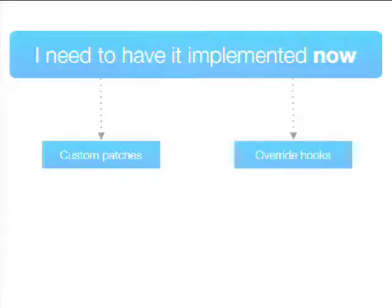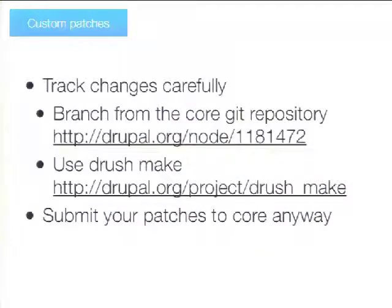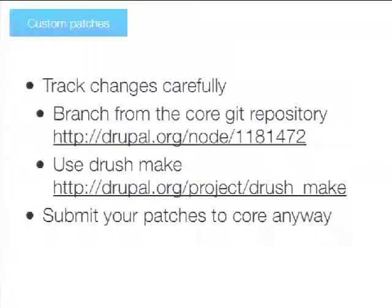If you need to implement something now in Drupal 6 or 7, you'll likely want to either use custom patches or override hooks. If you use custom patches, I'd suggest tracking your patches very carefully — maintain a list of what patches you have. There are two great methods: branching from the Drupal core git repository, and using the patch application system in Drush Make, where you can say 'I want to use this Drupal core version and apply this set of patches' and deploy that to your environment.